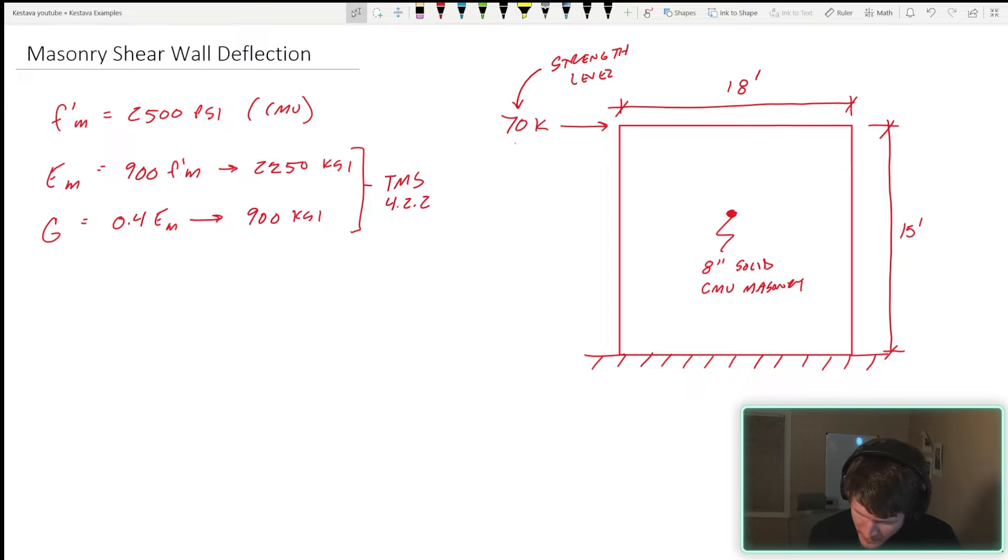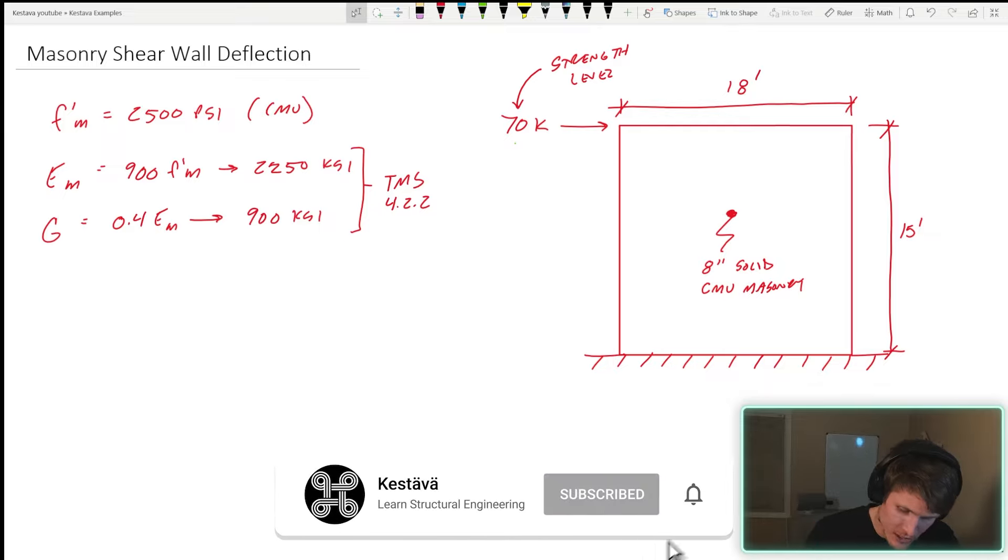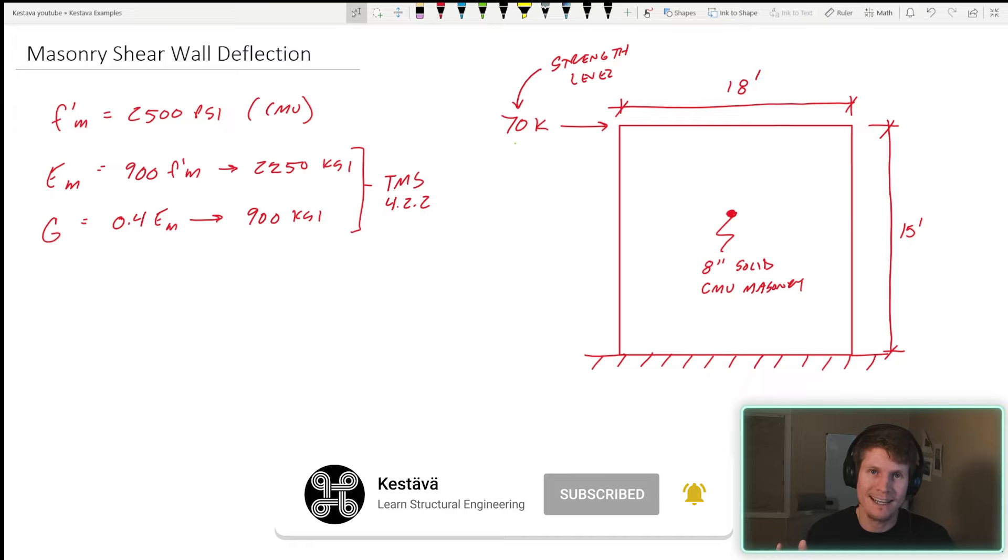We have a 15-foot tall reinforced solid masonry wall. The wall thickness is 8 inches. The length of the wall is 18 feet. We have a shear demand of 70 kips applied at the top of the wall laterally in plane with our wall. This is an in-plane analysis. How much does this wall displace?